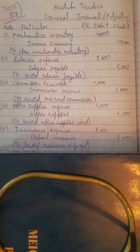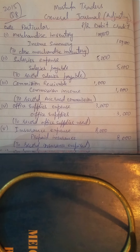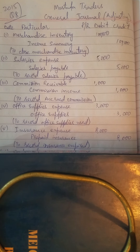The third entry: commission accrued Rs. 1,000. In the trial balance, commission income is given as Rs. 4,000. Since the titles are different, commission receivable will be debited and commission income will be credited by Rs. 1,000.